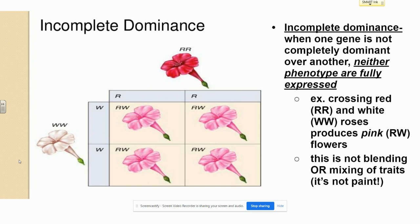However, the heterozygous genotype, represented by a capital R and a capital W, is expressed as a pink flower. So what does this mean? Both the red and the white are expressed, but neither is fully expressed, and neither is completely dominant over the other.